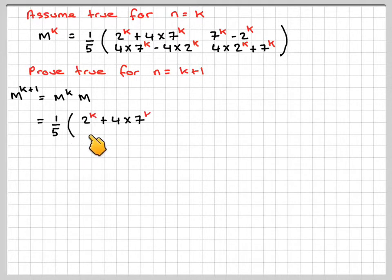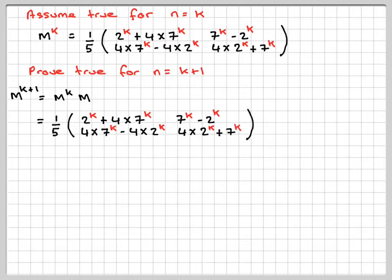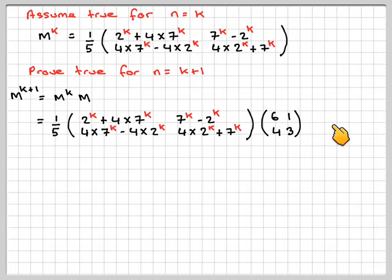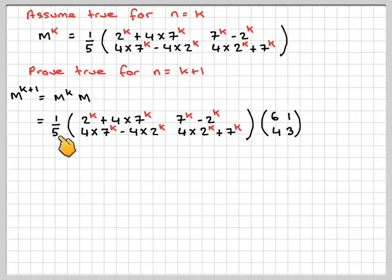So, taking our assumption M to the k and multiplying by the original matrix: to multiply matrices, you do row times column, and that gives you the first element in the answer. Row times second column gives the answer there. Row times the next column gives the answer at the bottom. You need to be careful with this and keep the 1 fifth out at all stages.